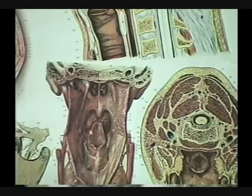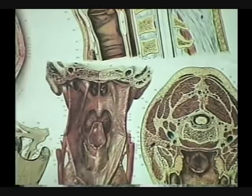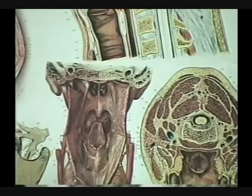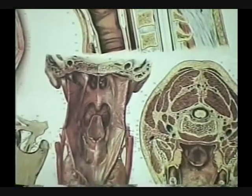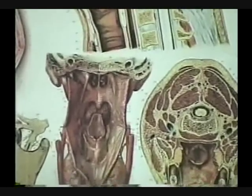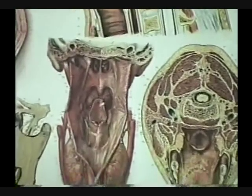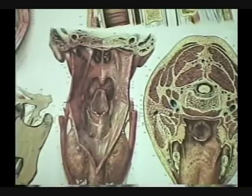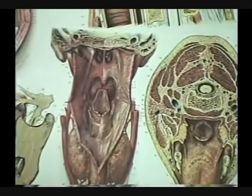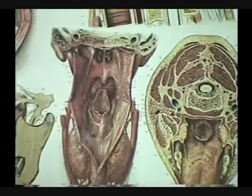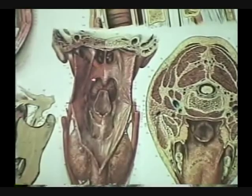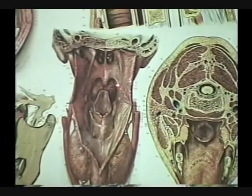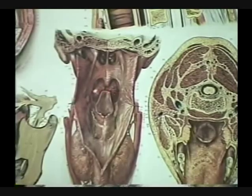Identify the cartilage in here. Epiglottis. That's the epiglottis. It is elastic cartilage — the tissue type is elastic cartilage, the structure is the epiglottis. What's this little guy? Uvula. Is there anything else to look at in there? You can see the tonsils — there's the palatine tonsils, there's the lingual tonsil.